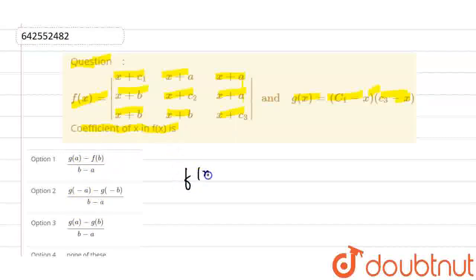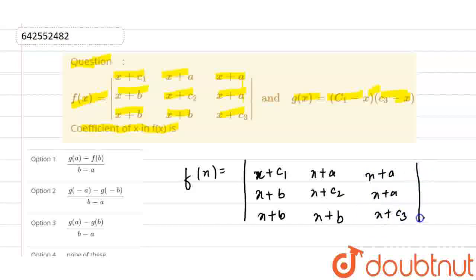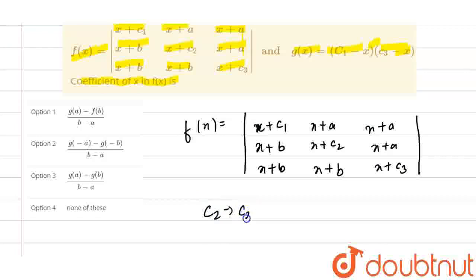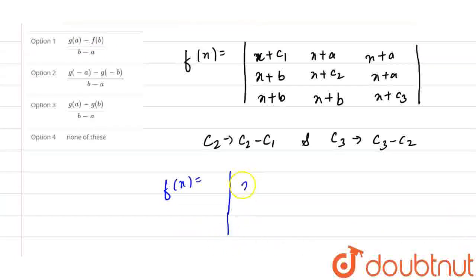So function f(x) is given with the first row as x+c1, x+b, x+b. Similarly, the second row has x+a, x+c2, x+b. And the third row has x+a, x+a, x+c3. Now by applying the column property C2 → C2−C1 and C3 → C3−C2, column 1 remains the same, giving x+c1, x+b, x+b.